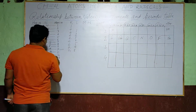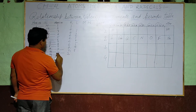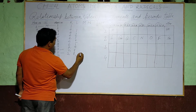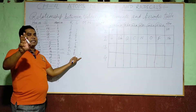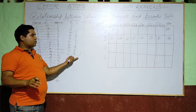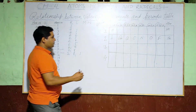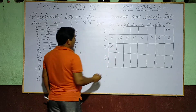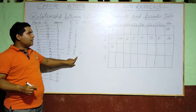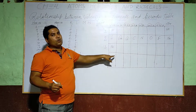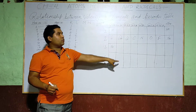Sodium has atomic number 11, configuration 2, 8, and 1. For the electronic configuration, 3 shells are required, so Sodium is placed in Period 3, Group 1A. Those elements whose valence electron is 1 are placed in Group 1A; valence electron 2 goes to Group 2A, and so on.